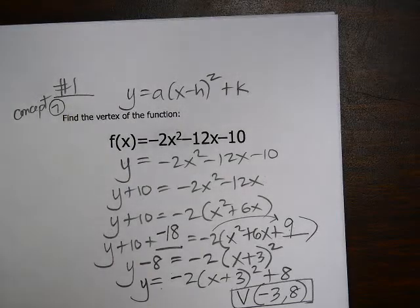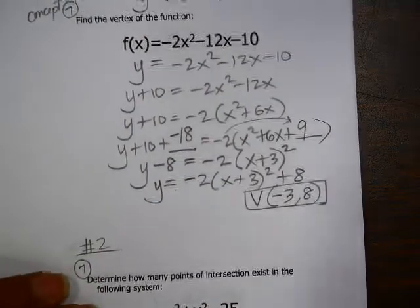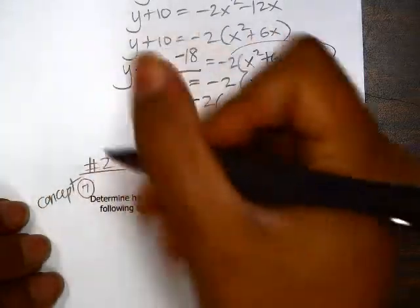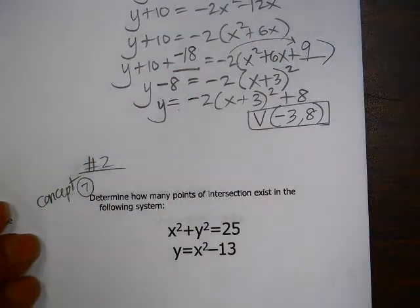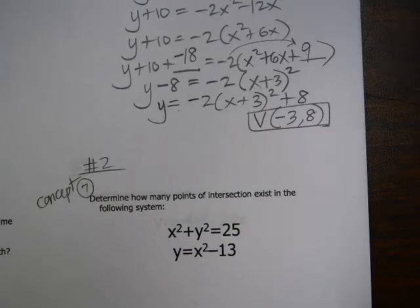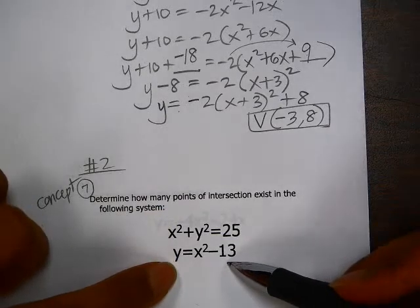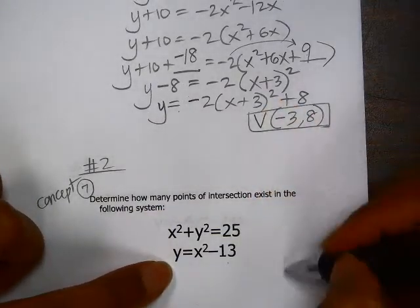We're going to look now at problem number 2, which is also concept 7. Determine how many points of intersection exist in the following system. So we have a circle in this first equation. Second equation is a parabola.